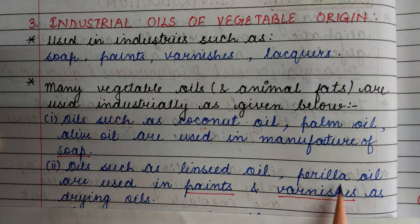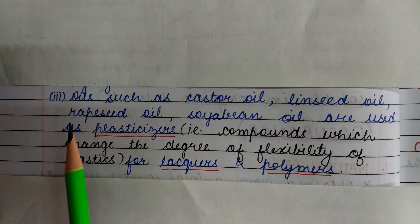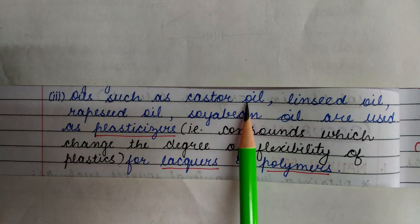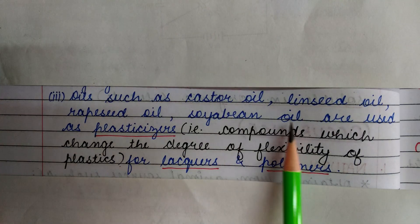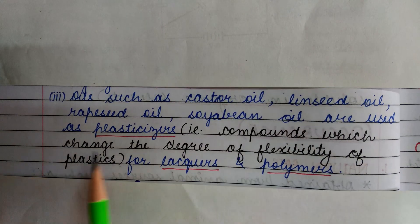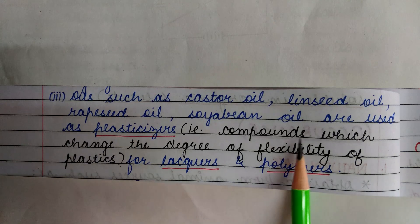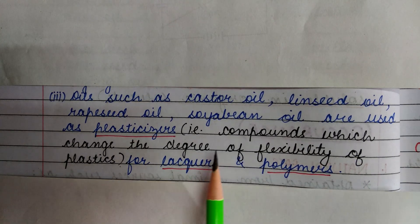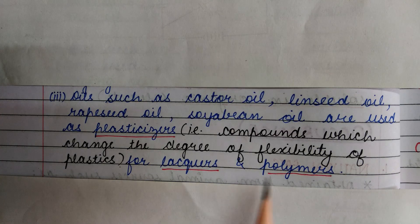Oils such as linseed oil and perilla oil are used in paints and varnishes as drying oils. Oils such as castor oil, linseed oil, red seed oil, and soya bean oil are used as plasticizers. Plasticizers are compounds which change the degree of flexibility of plastics, lacquers, and polymers.